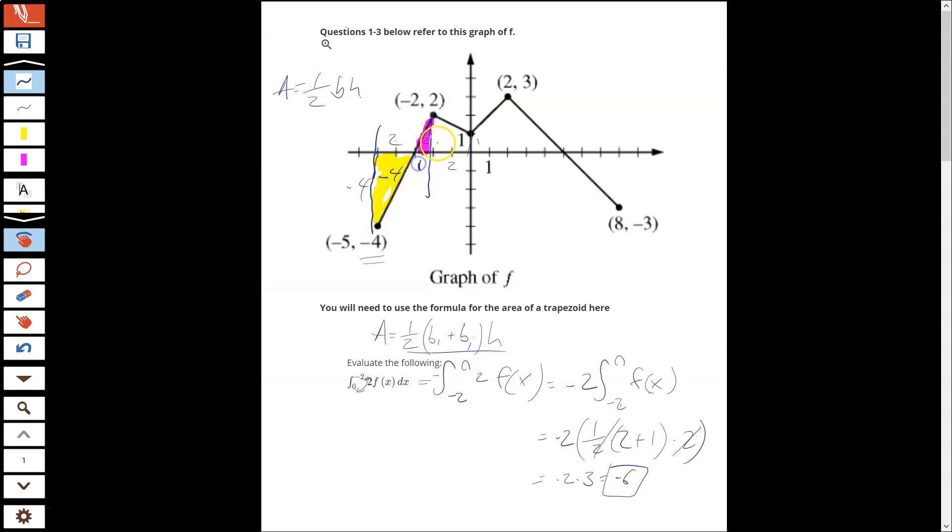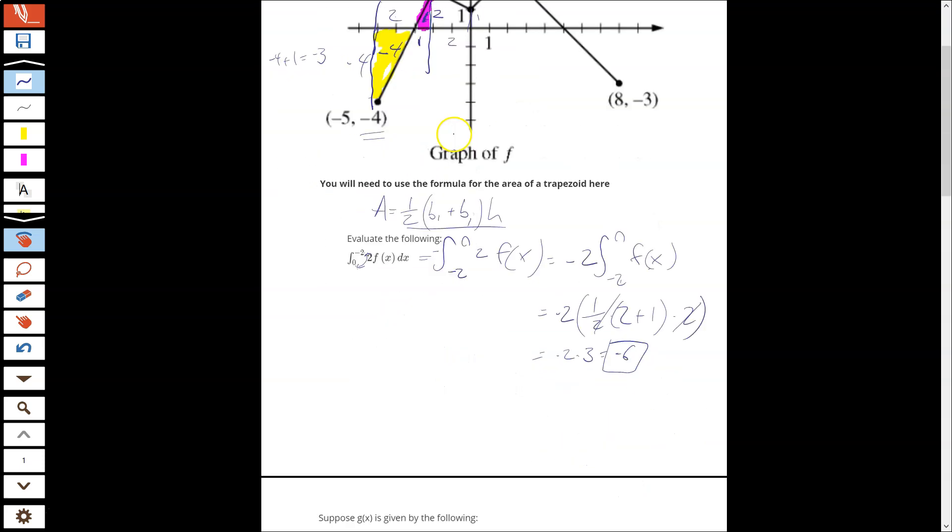Here we have a triangle with width 1, or base 1 rather, and height 2. So we're going to do 1/2 times 2 times 1. We're going to get an area of 1. So this integral that we're trying to evaluate is going to be the sum of these. So negative 4 plus 1 is negative 3. And that's the integral from negative 5 to negative 2.